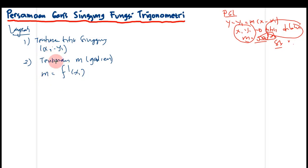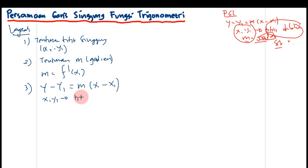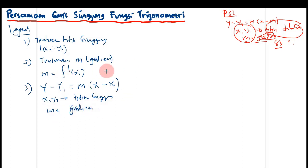Setelah kita tentukan ini, langkah yang ketiga adalah kita substitusikan ke rumus ini. Gunakan rumus Y dikurang Y1 sama dengan M dikali X dikurang X1. Di mana X1 dan Y1 adalah titik singgungnya, dan M adalah gradien dari garis singgungnya.